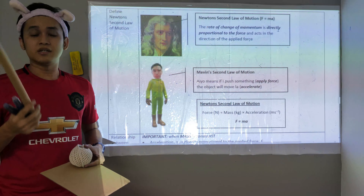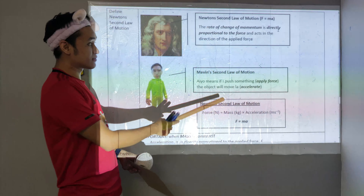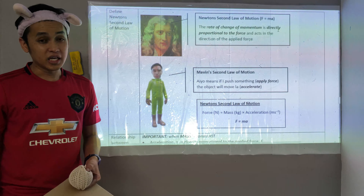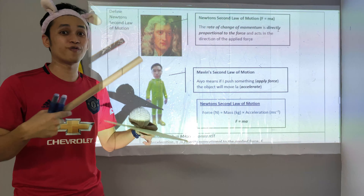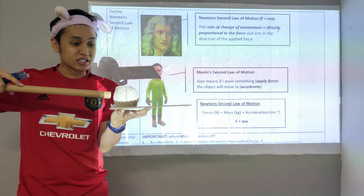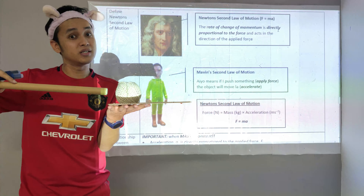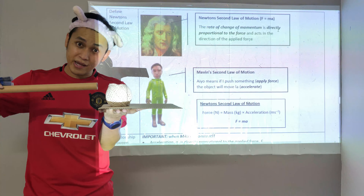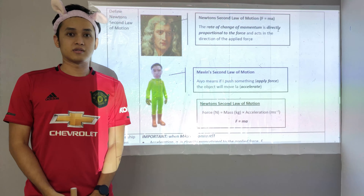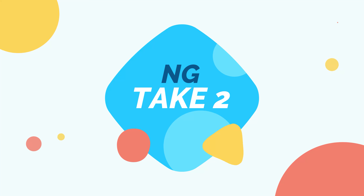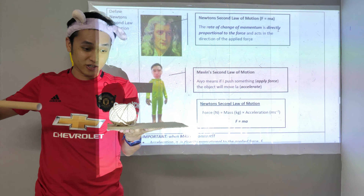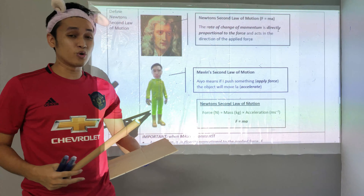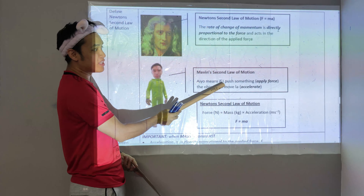If an object is moving and I push it, definitely it will move faster. So that is the meaning of Newton's second law — if you apply a force, of course that thing will accelerate, it will move faster. If you use a bigger force, of course that thing will move even faster. Now I apply a small force — it accelerates a little bit only. If I apply a higher force, that thing will roll faster. That is actually the meaning of the second law.